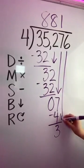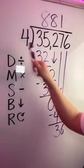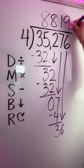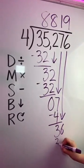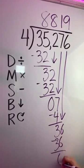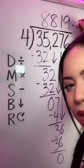And we're going to bring down the very last digit in the dividend. Four goes into 36 exactly nine times. Nine times four is 36. This will give us a remainder of zero. So the quotient is 8,819.